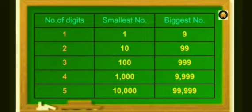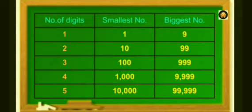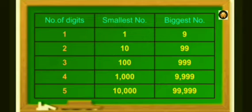So, up to now, we are familiar about 5 places: unit place, tens place, hundred place, thousand place, and ten thousand place, and we are also able to read and write 5-digit numbers.